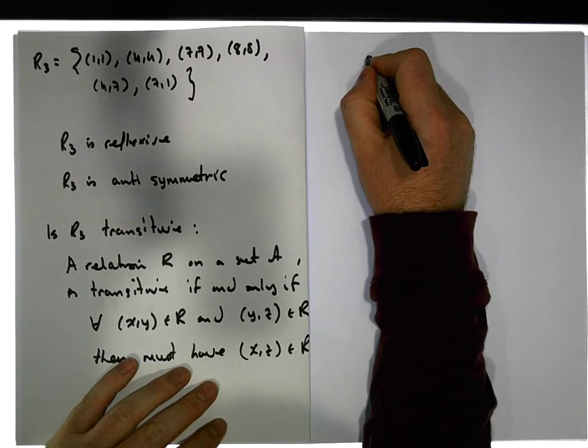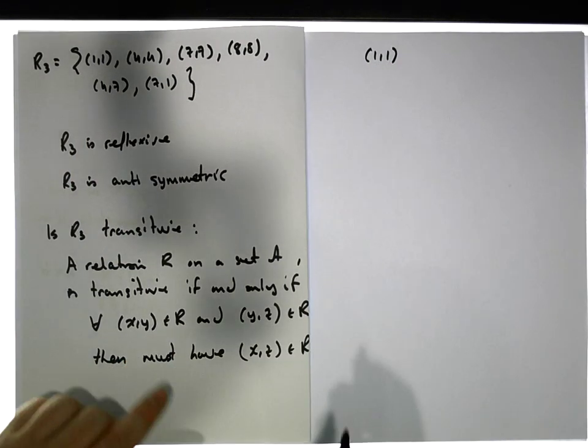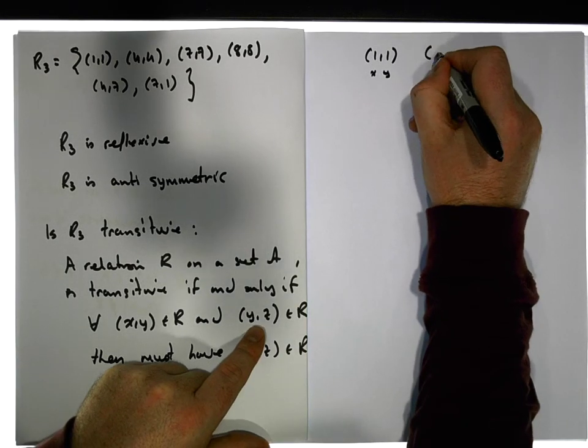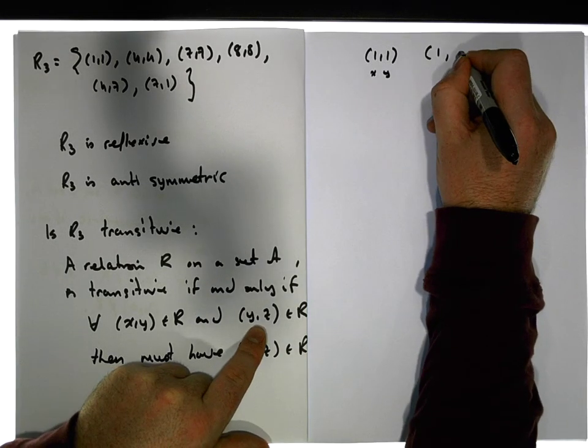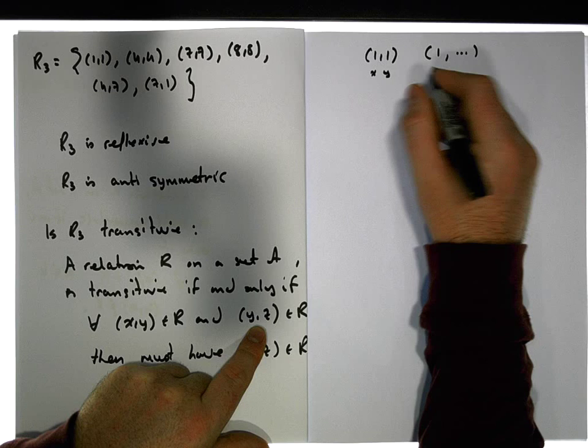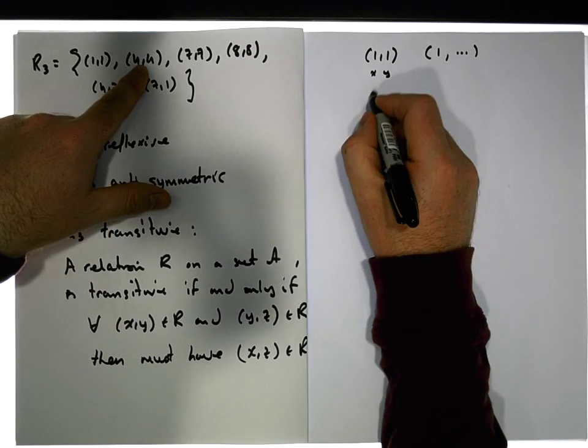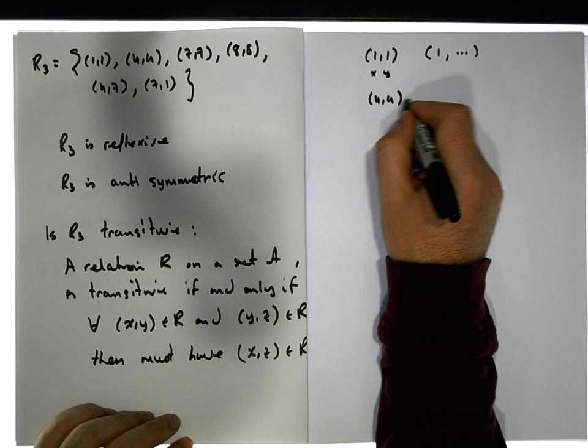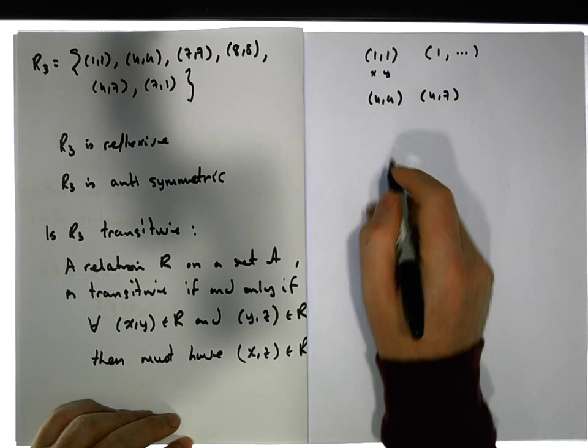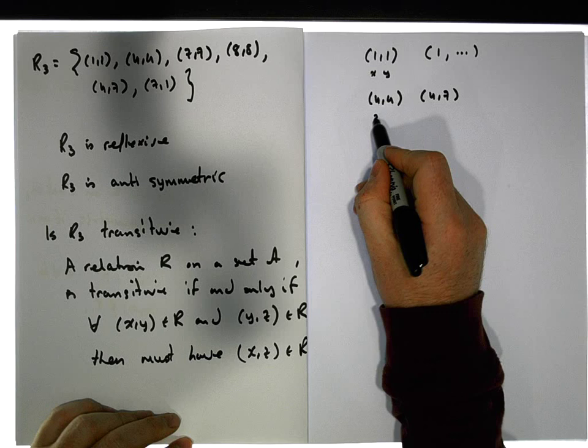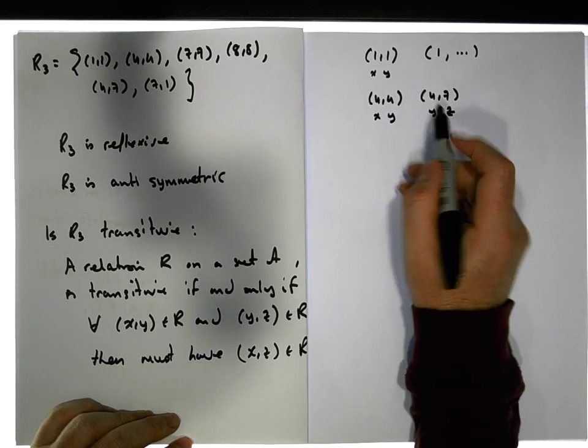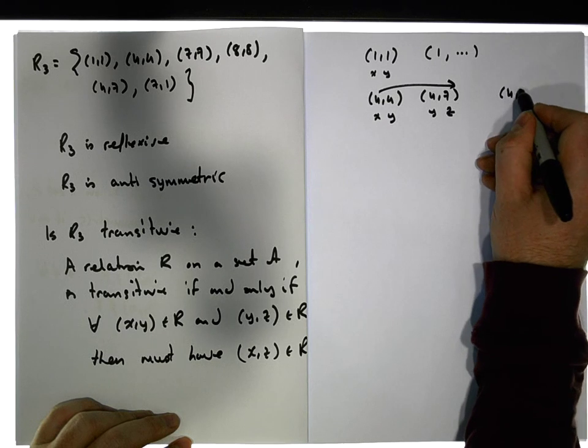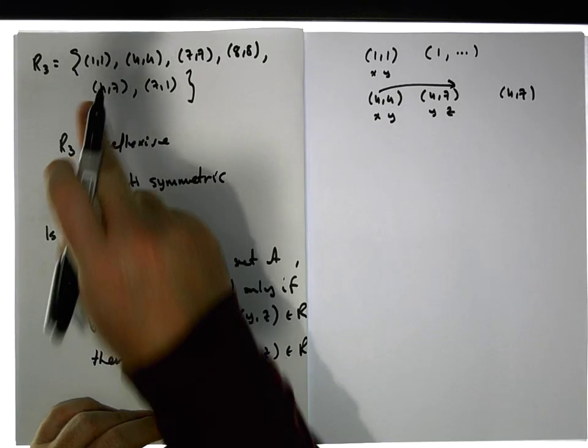Looking at one to one, there's an ordered pair. This is our x and our y. Is there another ordered pair in here from one to something else? No, there's not. So we exclude that. Looking at four, four. What ordered pair can I line this up with? I can align it up with four, seven. So the question now is, I can go from x to y and from y to z. Can I go from four directly to seven? Can I go from four to seven? Is that in this relation? And there it is there. So that's good.